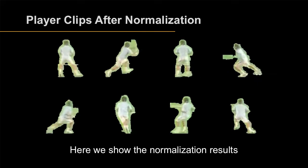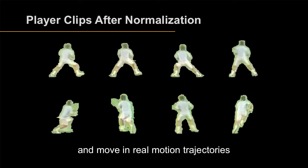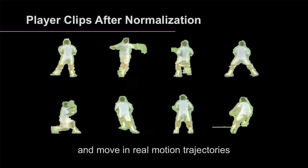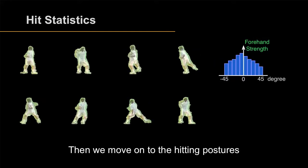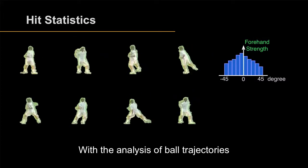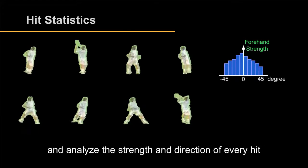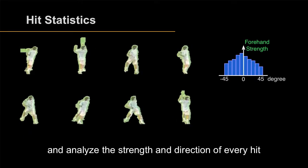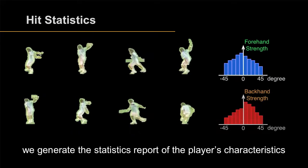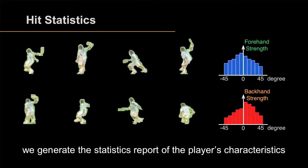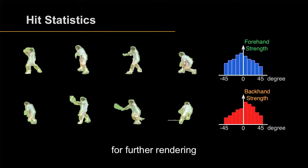Here we show the normalization results. All the players have the same size and move in real motion trajectories. Then we move onto the hitting postures. With the analysis of ball trajectories, we detect when a player hits the ball and analyze the strength and direction of every hit. After gathering hitting data, we generate the statistics report of the player's characteristics, which is important information for further rendering.